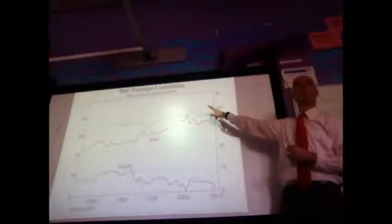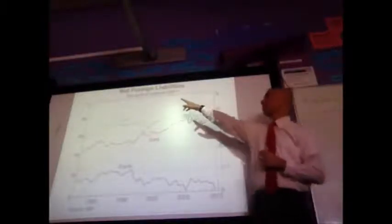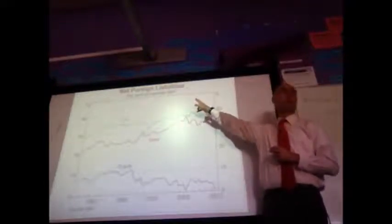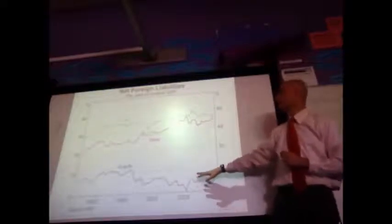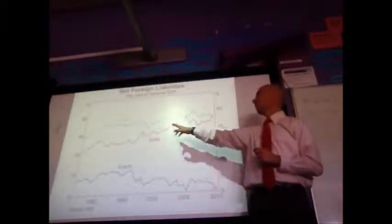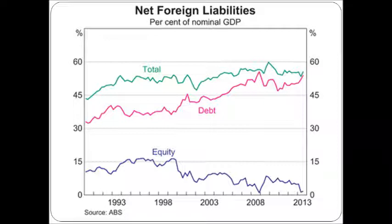And there are two things I want you to take into account. This is as a percentage of GDP. This takes into account economic growth. What I want you to take into account for the last 25 years: Net foreign liabilities have grown. They were about 45% 25 years ago. Today, they're about 55%. They peaked at 60% a few years ago.